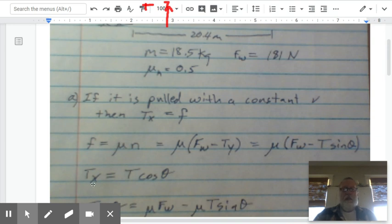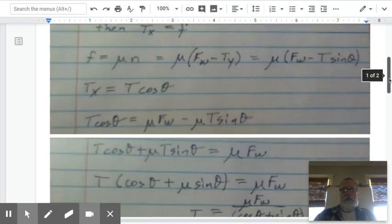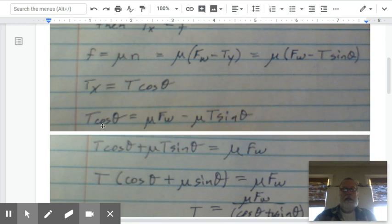The Tx component is a lot simpler to come up with. It's simply the tension times the cosine theta. And that will give us the x component of the tension. Then what we do is we said that the horizontal component of the tension has to be equal to the friction. So we just derived these two equations up here. And now it's just a matter of rearranging the equation and then solving it algebraically.